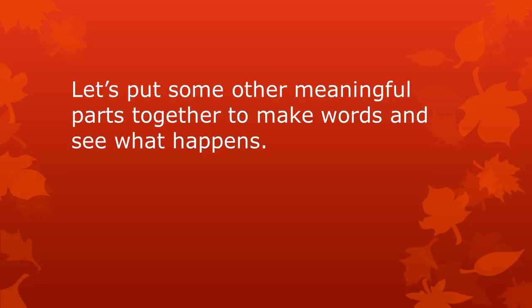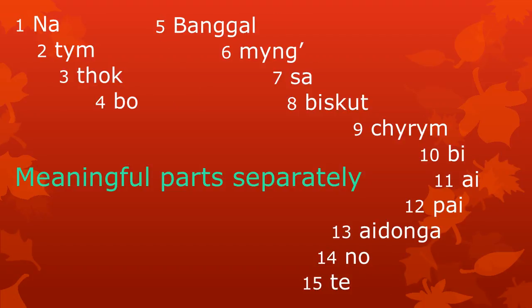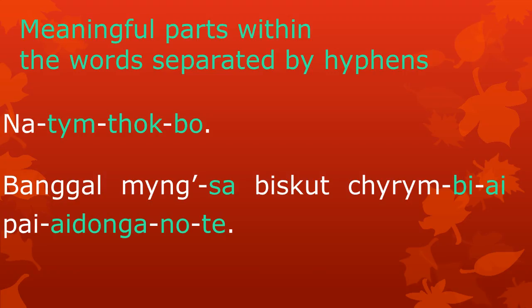Let's put some other meaningful parts together to make words and see what happens. Here you see a list of meaningful parts. When you put them together from top to bottom, you get two short sentences. Try to say the two short sentences. As you can see, there are 15 meaningful parts in total in the two sentences. When we write them together, they form six words — one word in the first sentence and five words in the second sentence. The meaningful parts in the words are separated by hyphens.